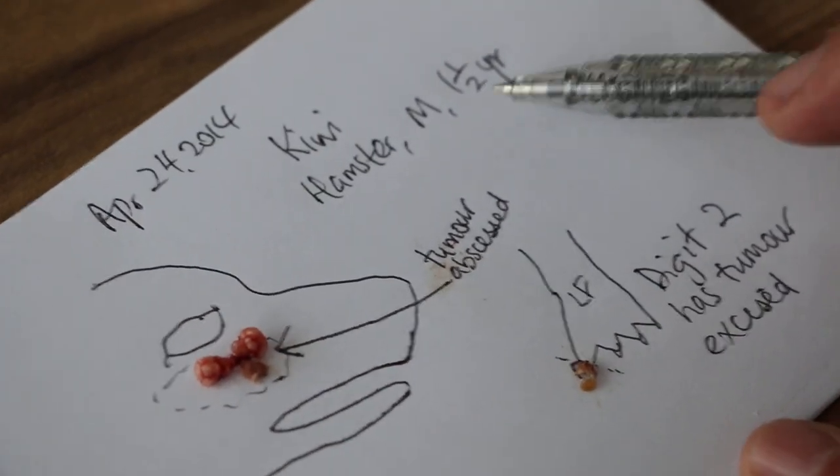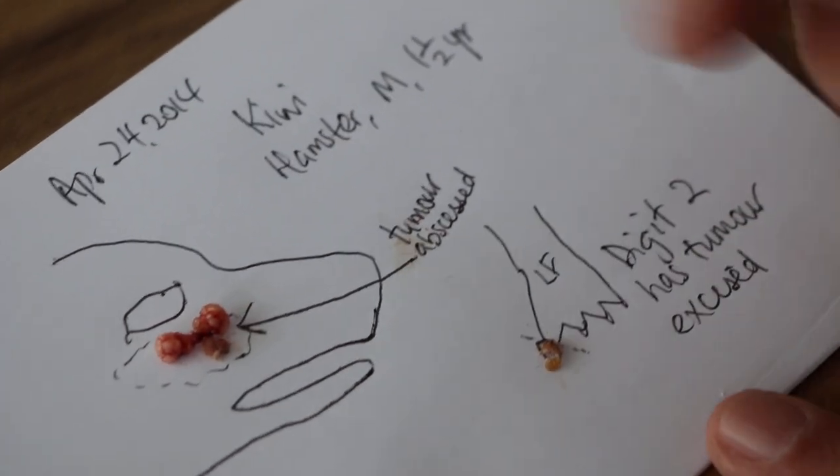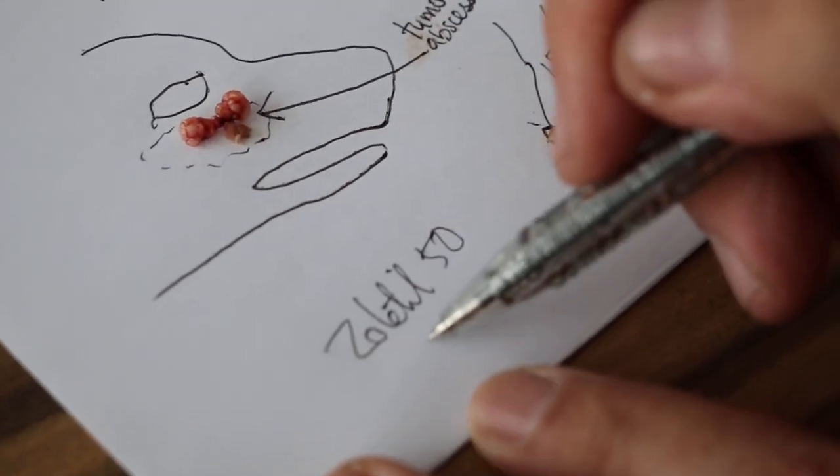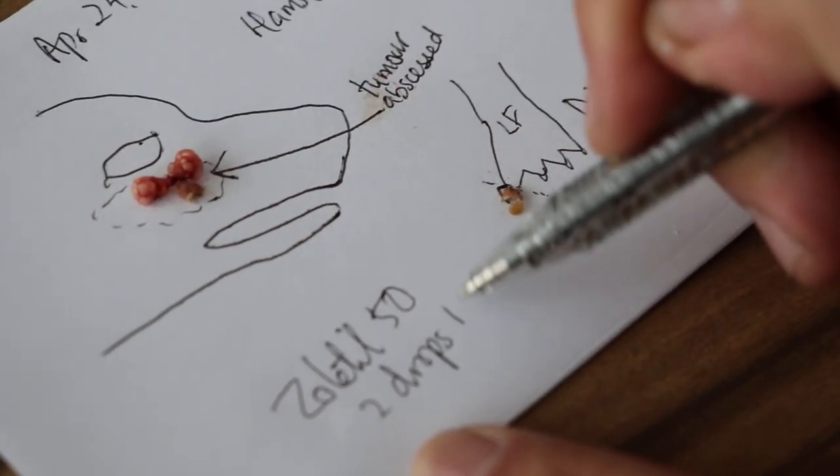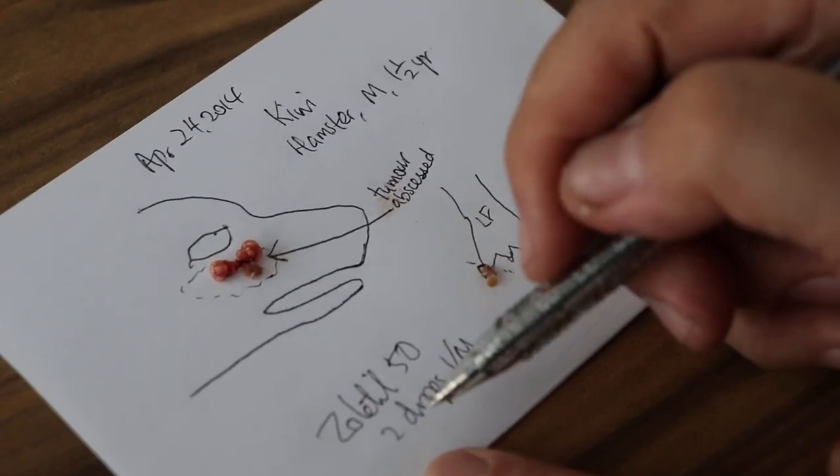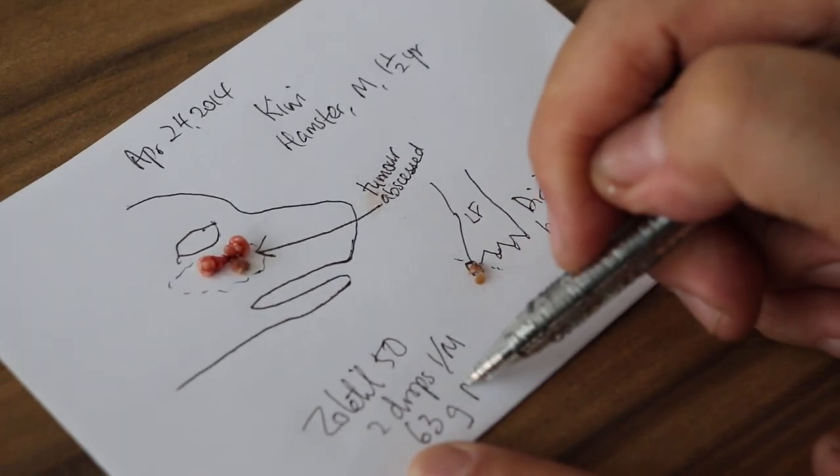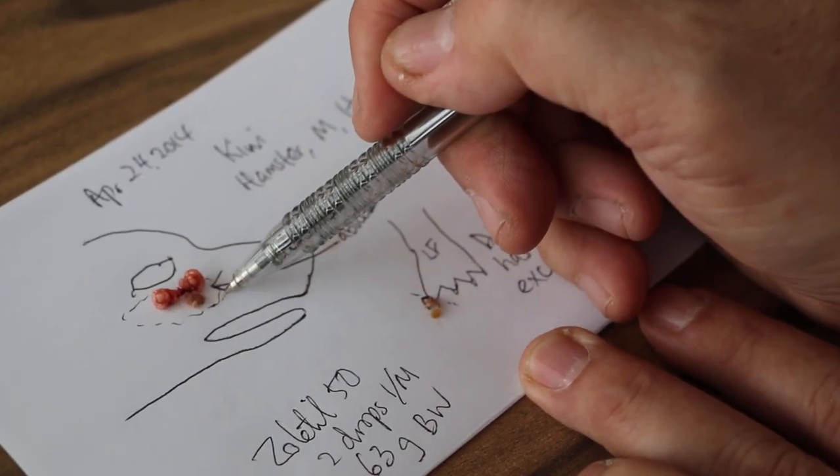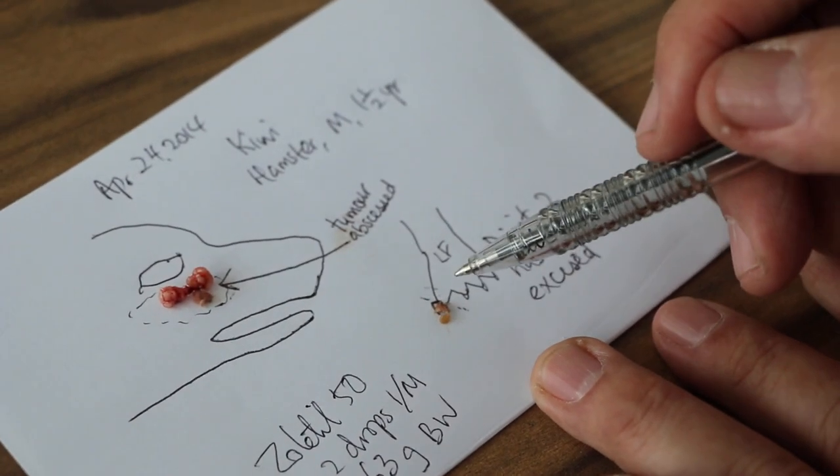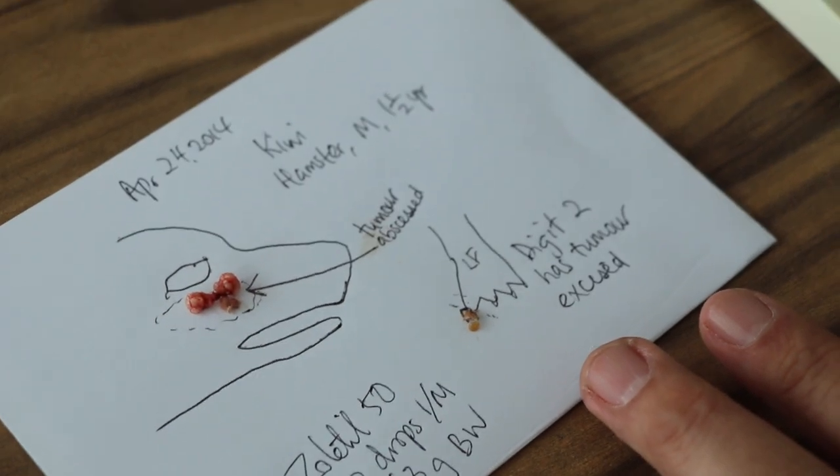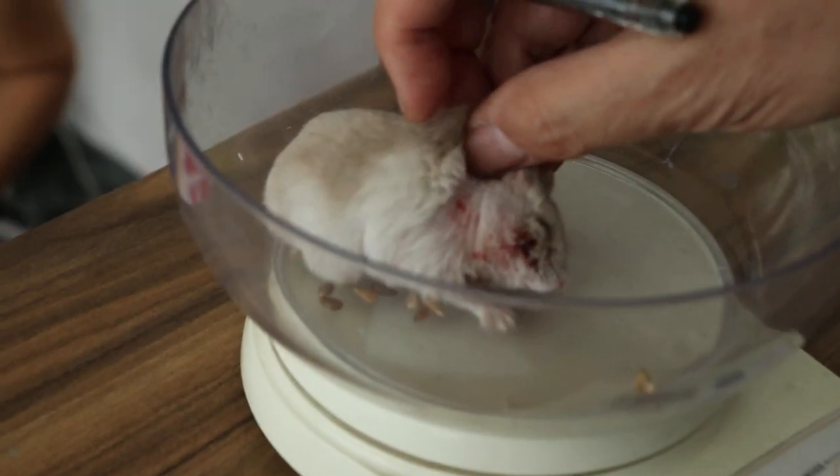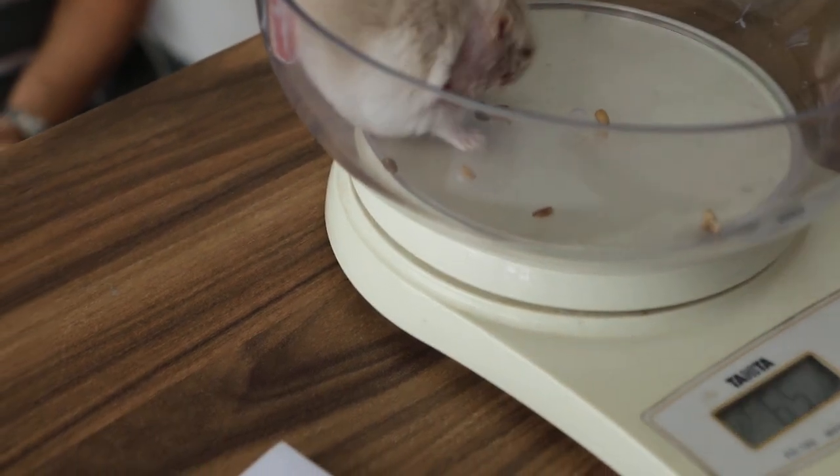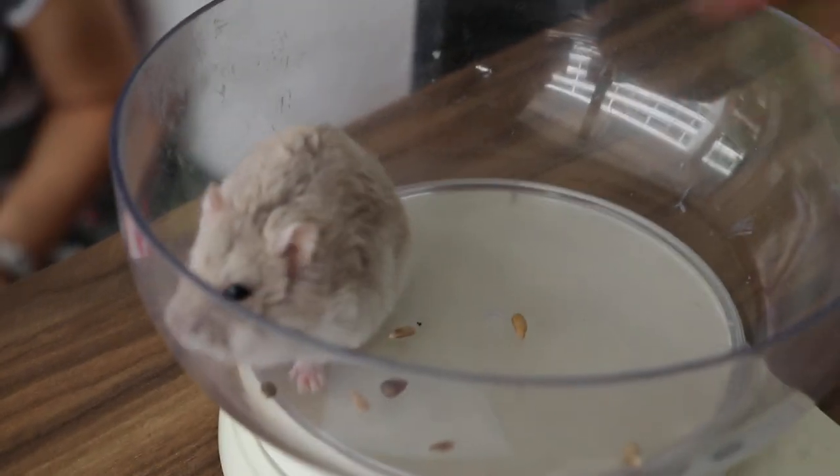Using Zoletil I find it very safe, Zoletil 50, two drops IM. But it gives you a few seconds. For 61-63 grams body weight, it gives you about less than three minutes. So you have to really do a fast job, electro excision and amputation, and then you will get a hamster who's alive. Otherwise you will get a hamster that is dead. There's no point because no matter how good your surgery is, a hamster is not appreciated by the owners.